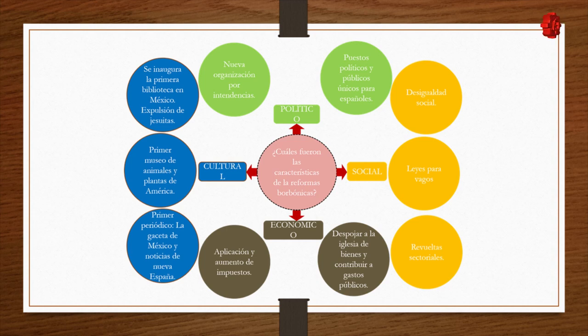Returning to the reforms: in the social sphere, much inequality was generated. Giving only Spaniards the privilege of obtaining political, military, and public positions created inequality among criollos, mestizos, castas, and indigenous people. A series of laws for vagrants was also implemented — people wandering the streets — stipulating that they must work on haciendas: haciendas de Trapiche where sugarcane was processed, haciendas de beneficio near the mines, haciendas cerealeras, and haciendas ganaderas. Due to these changes, many revolts and movements arose from different social sectors, an example being the independence movement, which in its first stage was only against these reforms.